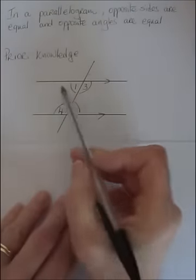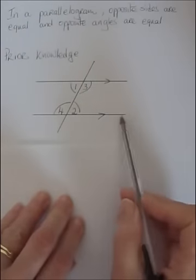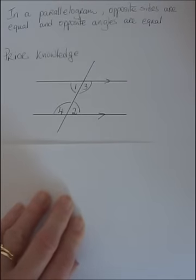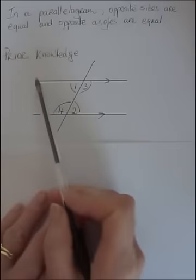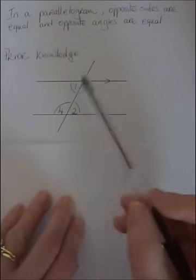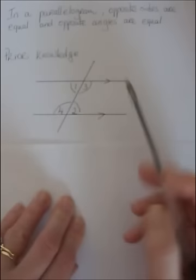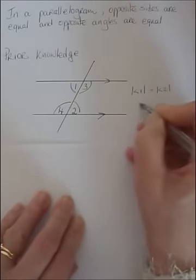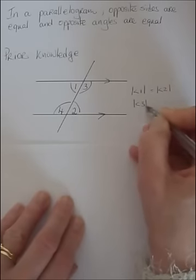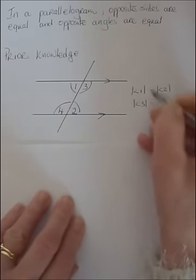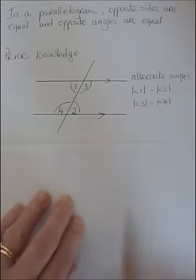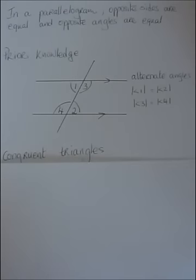We're going to talk about a parallelogram where opposite sides are parallel. With parallel lines, enclosed between the parallel lines we have alternate angles. So the measure of angle 1 is equal to the measure of angle 2, and the measure of angle 3 is equal to the measure of angle 4 — and they're alternate angles.